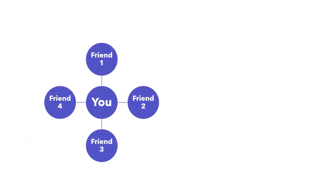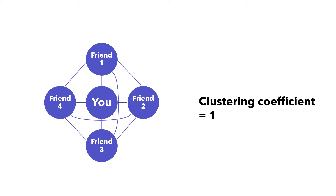The clustering coefficient tells you how closely connected your friendship network is. A number close to one means that your friends are good friends with each other. Let's assume that you have four good friends. If your friends are all friends with each other, you can connect each pair of friends with a tie, giving six friendship ties. Since everyone is connected to one another, the clustering coefficient is one.